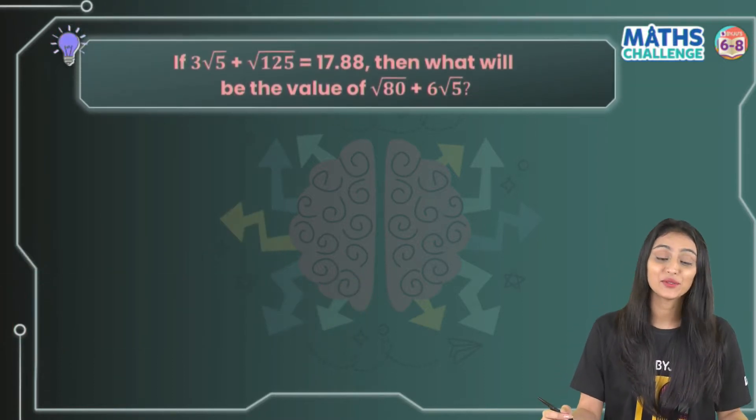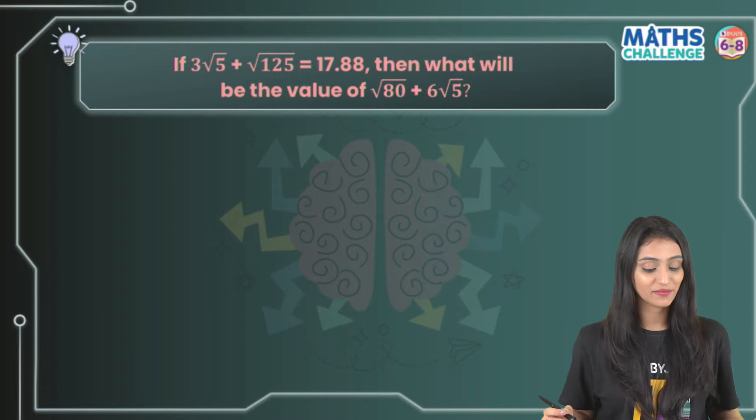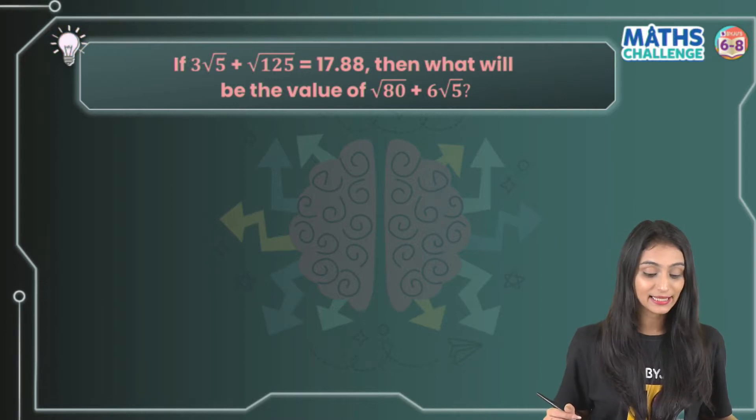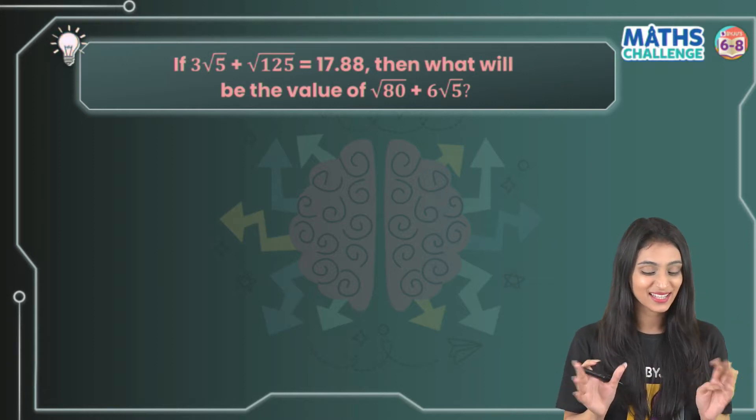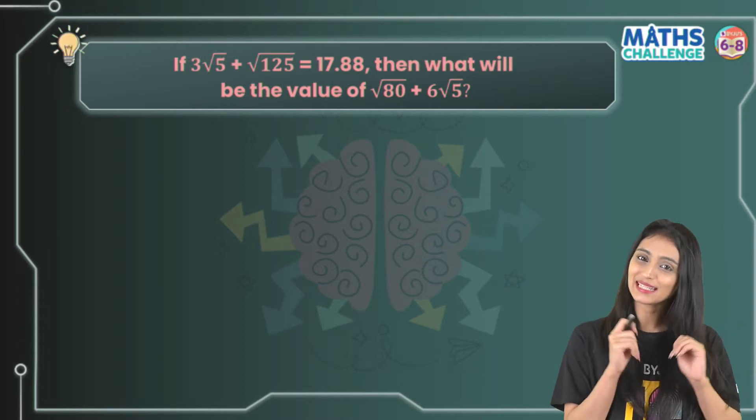Hey students, today I'm here with another amazing Olympiad question. If 3√5 + √125 = 17.88, then what will be the value of √80 + 6√5? This question involves a lot of roots and looks tricky, but let's see how simply we can solve it.